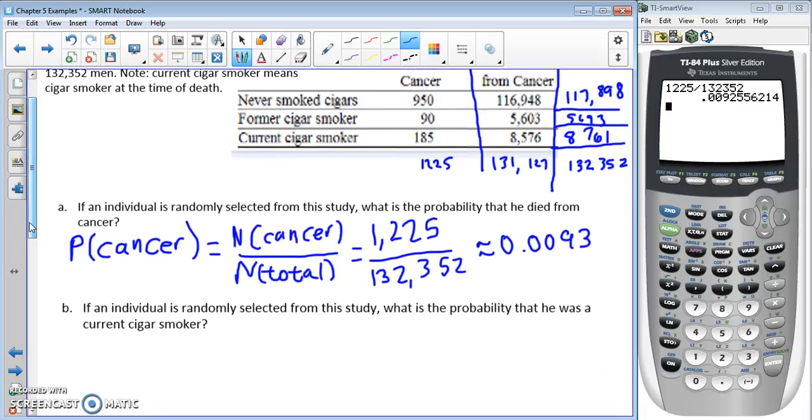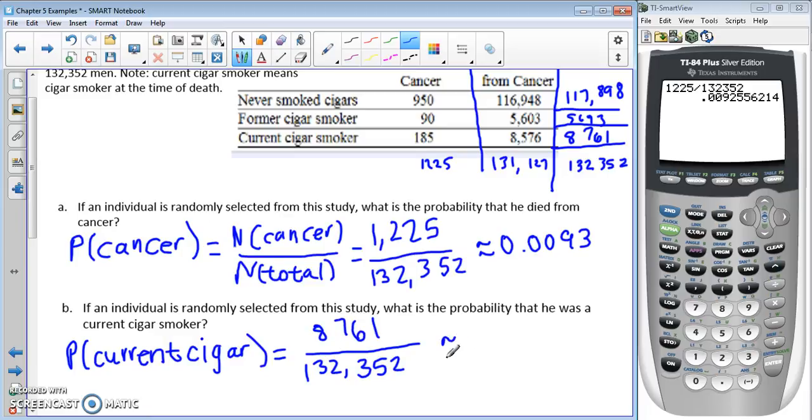Part B asks: if an individual is randomly selected from the study, what's the probability they were a current cigar smoker? Current cigar smoker is the number of cigar smokers over the total. Current cigar smokers—looking at current, not former—is 8,761. Let's look for a decimal approximation to four places: divide by 132,352, which equals 0.0662.